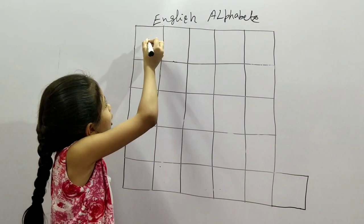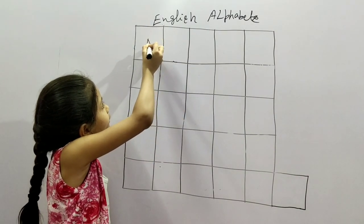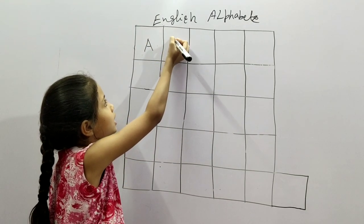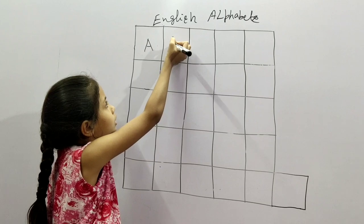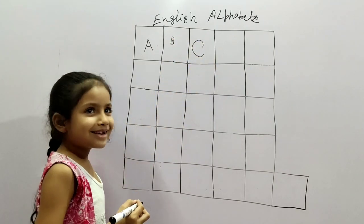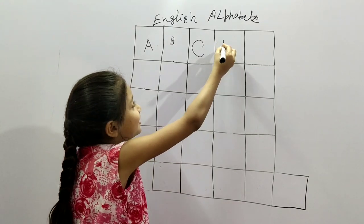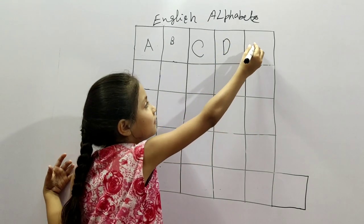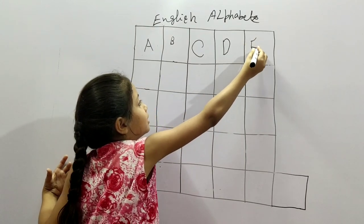A for apple, B for ball, C for cat, D for dog, E for elephant.